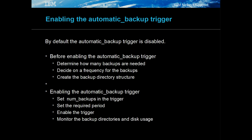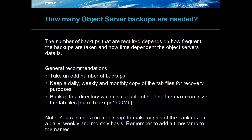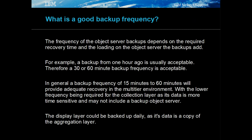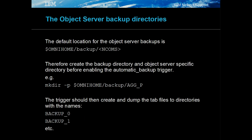Then enable the trigger. Monitor the backup directories and disk usage to ensure that there are no issues and that the backups are being created successfully. There is no fixed set of backups that need to be taken; consider the general guidelines and fit these within the requirements and limitations of your system. It is a good idea to have ad hoc backups whenever major updates are made, along with a set of regular backups. A good backup frequency will depend on how much impact taking a backup has on the system, matched with their usefulness and available resources. In general, a backup frequency of 15 to 60 minutes is adequate for the aggregation layer. By default, the automatic_backup trigger puts the backups in the omni-home backup object server directory. Therefore, create this directory structure so that the trigger can create the backup directories and dump the tab files.